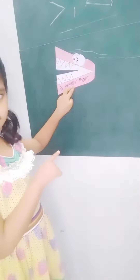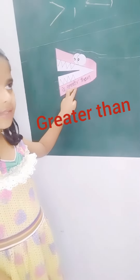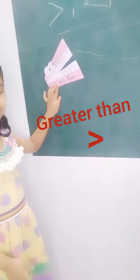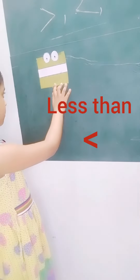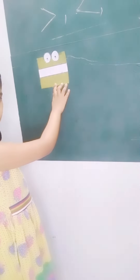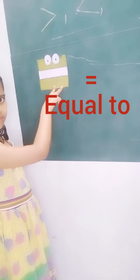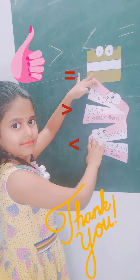This is the greater than symbol. This is the less than symbol. And this is the equal to symbol. Remember it like this — it is very easy. Thank you.